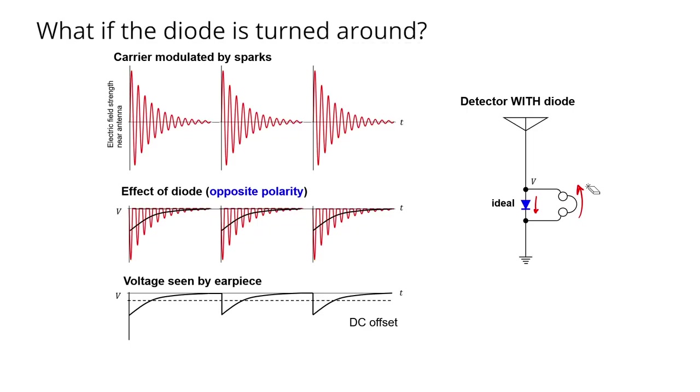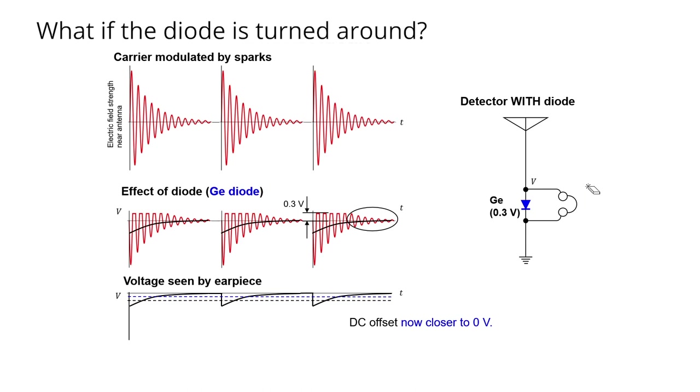What happens if we use a germanium diode rather than an ideal diode? A germanium diode has a turn-on voltage of about 0.3 volts. As you can see in this diagram, the ideal diode turns on at 0 volts. Anything higher than 0 volts, it's on. The germanium diode needs a little bit more voltage to get it to turn on. This means that the moving average is going to be slightly closer to 0 than it was in the case of the ideal diode. The germanium diode is a little bit more difficult to turn on than the ideal diode was. In other words, it's not as good.